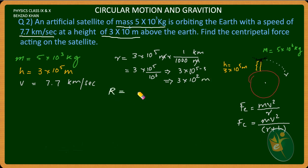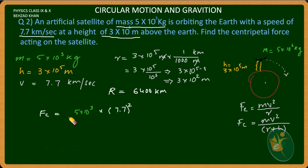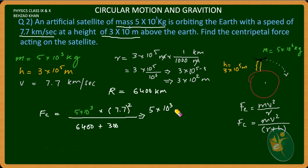We know the radius of Earth is 6400 km, so substituting all values: centripetal force equals 5 into 10 to the power 3 times 7.7 squared, divided by r plus h, which is 6400 plus the height, all to the appropriate power.